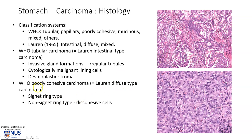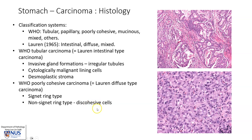The WHO poorly cohesive carcinoma corresponds to Lauren diffuse type carcinoma, and it includes signet ring type carcinoma as well as non-signet ring type carcinoma where the cells either form sheets or they are discohesive.